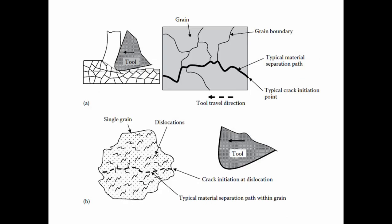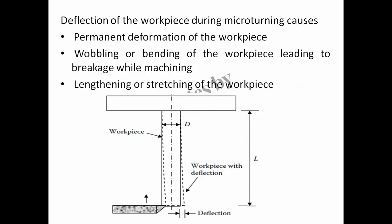The figure schematically shows a typical crack initiation and material separation path. In the case of brittle materials, the failure is initiated at grain boundaries, but the failure mode is brittle fracture. Deflection of the workpiece during micro turning causes permanent deformation, wobbling or bending of the workpiece leading to breakage, and lengthening or stretching of the workpiece. It is seen that the diameter increases with increasing length of the workpiece, indicating that the uncut chip thickness decreases more at the free end and less at the fixed end as a result of deflection.